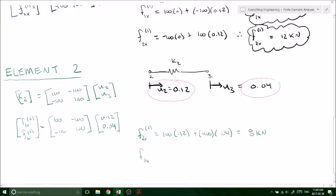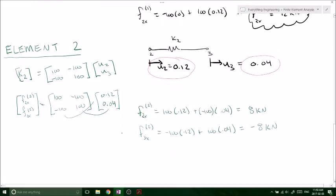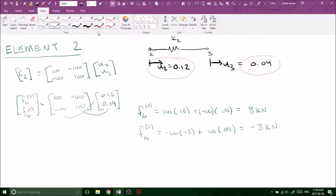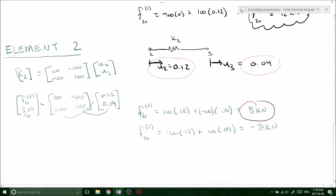So now the third node from the second member, matrix multiplication, right? Equal and opposite, negative 8 and 8. So that makes sense, everything balances out. We are good. So then this is the second set of answers.